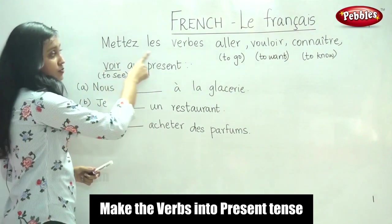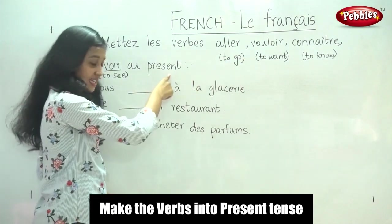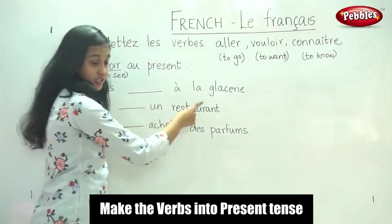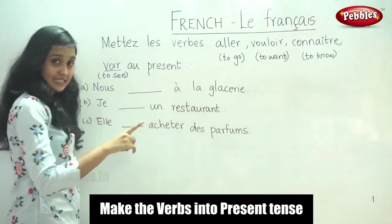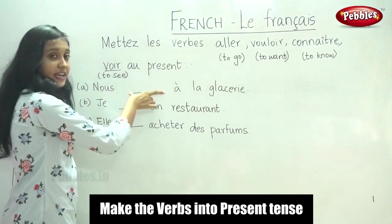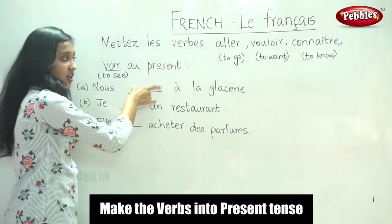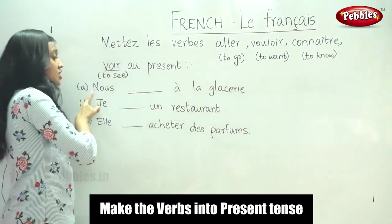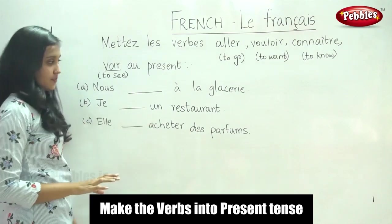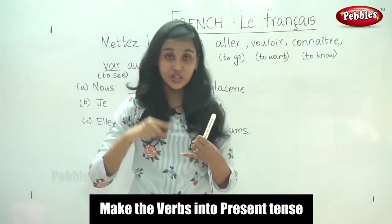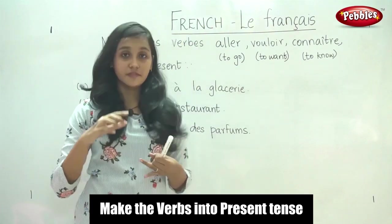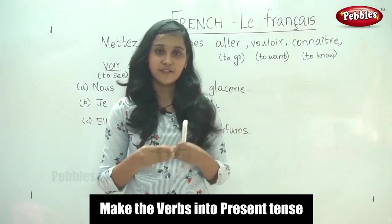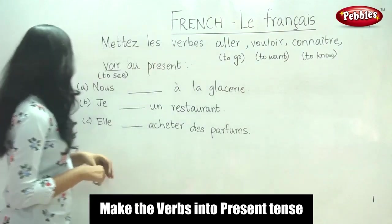Now, we have to use these four verbs in the present tense. We have been given three sentences. Three steps: first, read the sentence; second, identify which of the four verbs needs to be placed in the blank; and third, determine in which conjugation it should be placed. Let us begin.